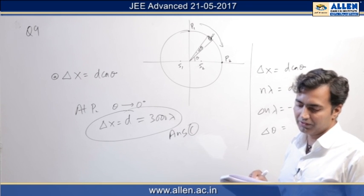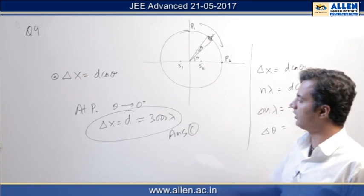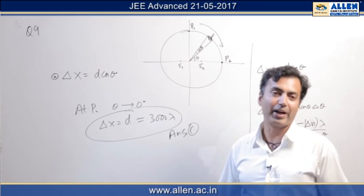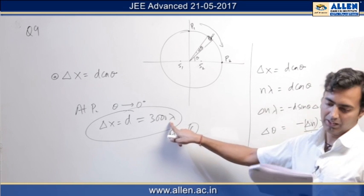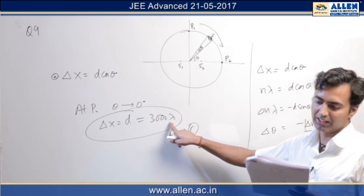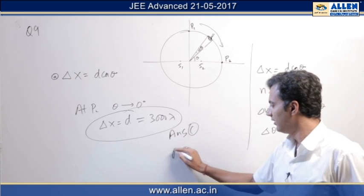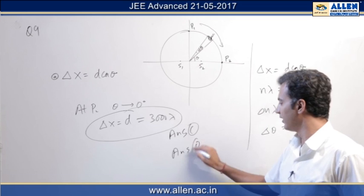To find the total number of fringes in this location, we could use delta x equals n lambda. Putting n lambda equals 3000 lambda, we would have n equals 3000. This gives d as another answer.